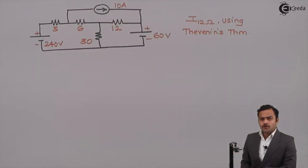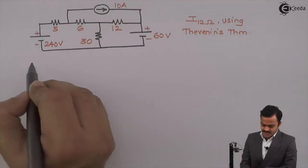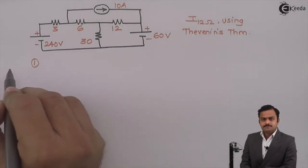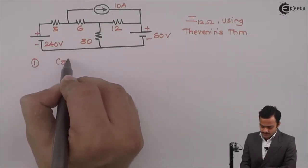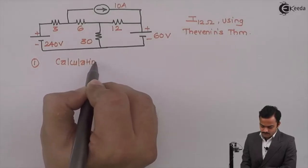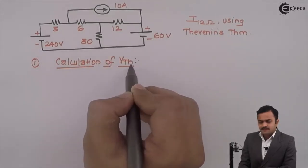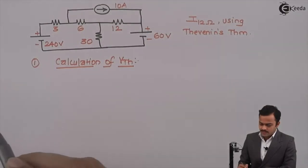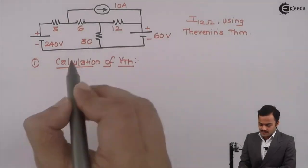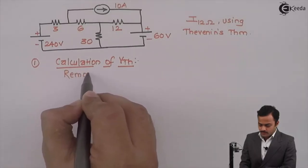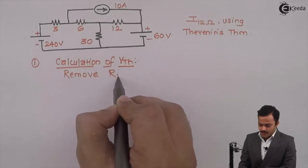Again, we need to follow the standard procedure. As per the procedure, first step, let's calculate VTH. VTH is nothing but Thevenin's equivalent voltage across load resistance once you remove it. Removal of RL is required.